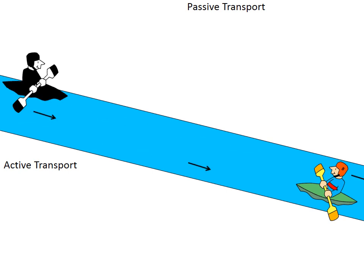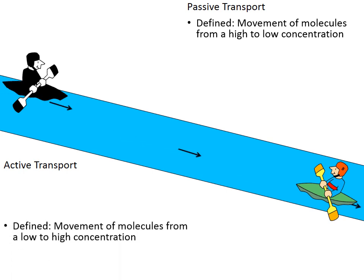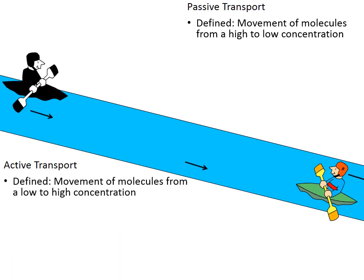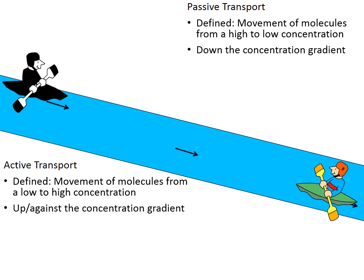I'd like to compare and contrast passive with active transport. Passive transport is how molecules move from a high to low concentration, but active transport is really just the opposite — it's how molecules move from low to a high concentration. You'll often hear that in passive transport molecules move down their concentration gradient, and in active transport molecules move up or against their concentration gradient.